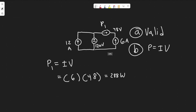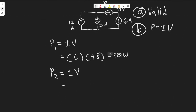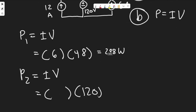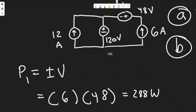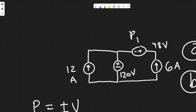Now for the second voltage source — this one's a little trickier because of how the current works. P2 equals I times V. The voltage is easy because it's given: the voltage across it is 120 volts, so V equals 120. Now we need to find the current. We'll use Kirchhoff's current law. We need to find the current through this source.